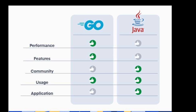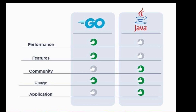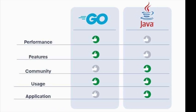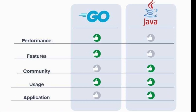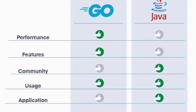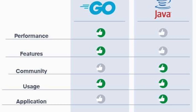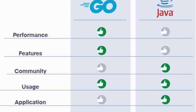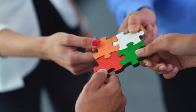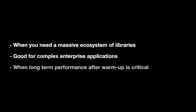In the end, it's not Java or Go — it's Java and Go, like peanut butter and jelly, except one takes 10 times more memory. Smart teams choose the right tool for each job.